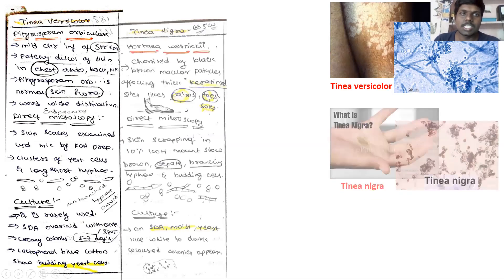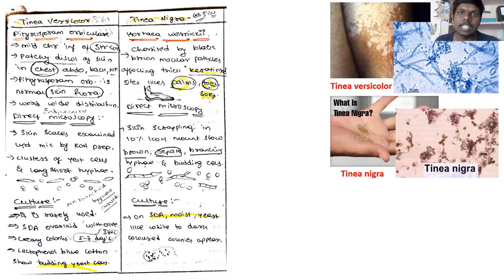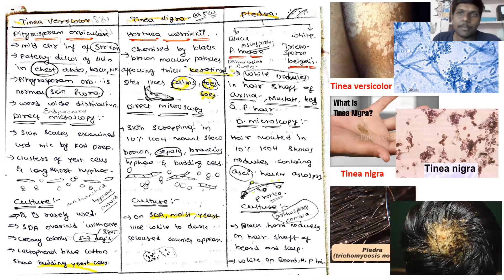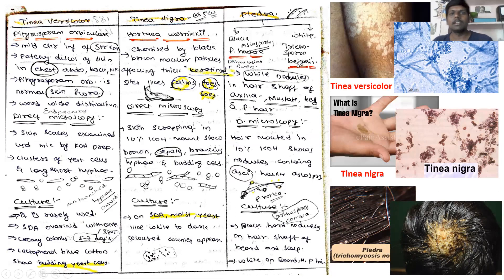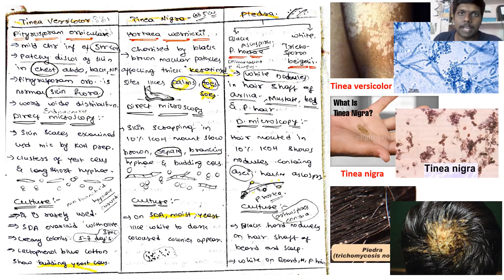Then we have Tinea nigra, which is a fungal infection to the keratinized tissue of palms and soles. It is caused by Hortaea werneckii. And we discussed one more disease which is Piedra, which is the infection to the head. In Piedra we have two types of fungus: Piedra hortae and Trichosporon beigelii.